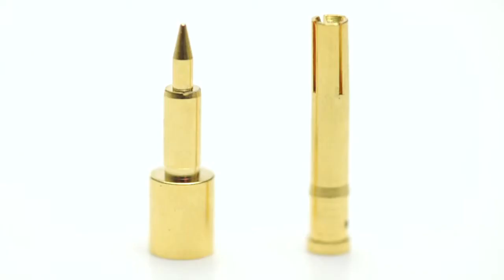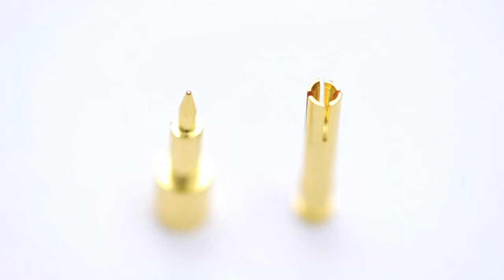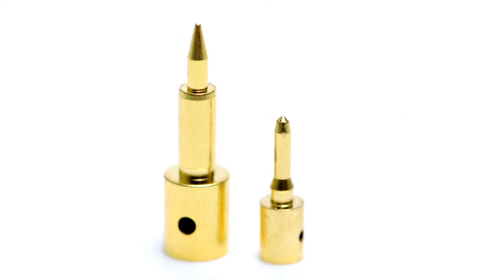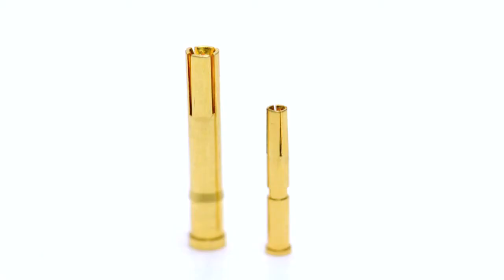The second property we need to identify is the polarity of the connector. Polarity is determined by the presence of a male pin on the connector. Most coax connectors come with a separate pin attached to the center conductor. A male pin is completely solid, while a female pin is hollow.